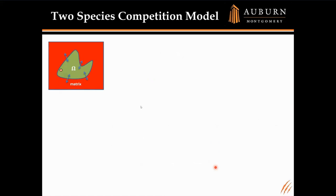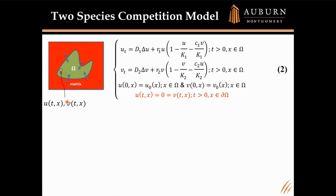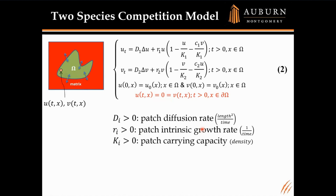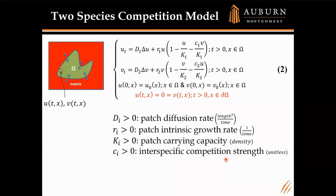For the two-species competition model, we still have an island surrounded by a hostile matrix, but now at every time t and location x, we model the density of two competing species u and v following a standard Lotka-Volterra diffusive competition model. D_i represents the patch diffusion rate, R_i the intrinsic growth rate, K_i the patch carrying capacity. C_i is the interspecific competition strength — C1 measures how much competition u is sensing from v. The higher the density of v, the more it starves u for resources.